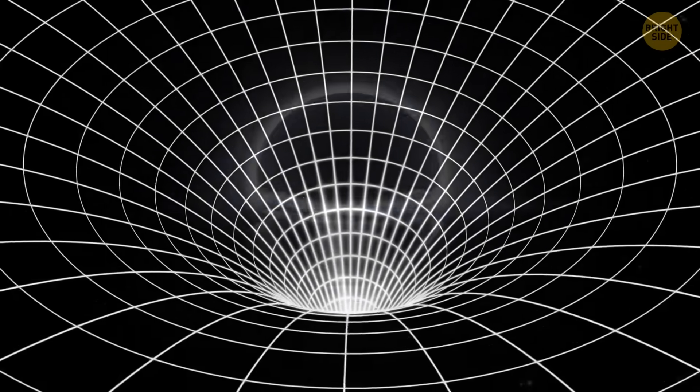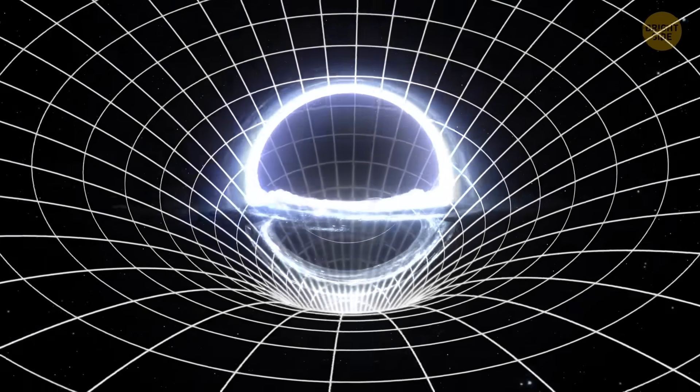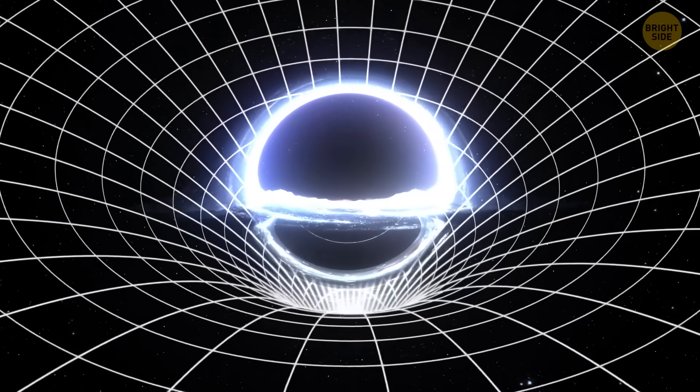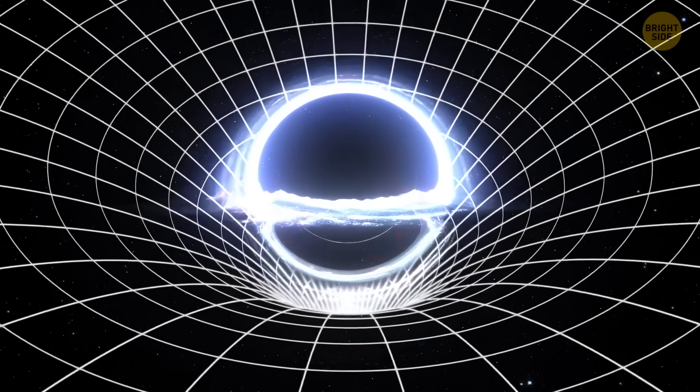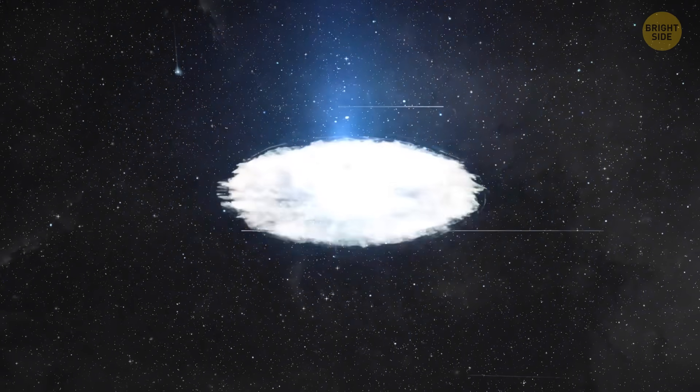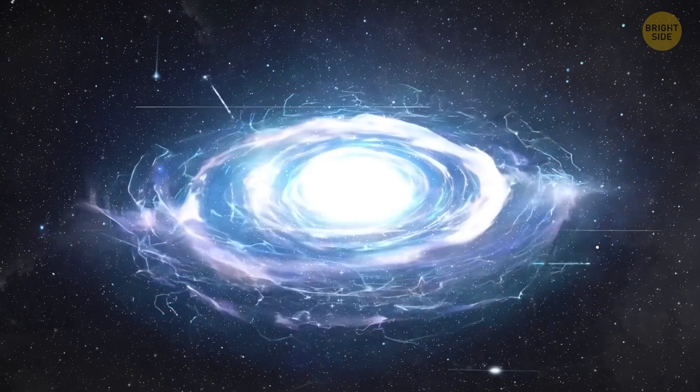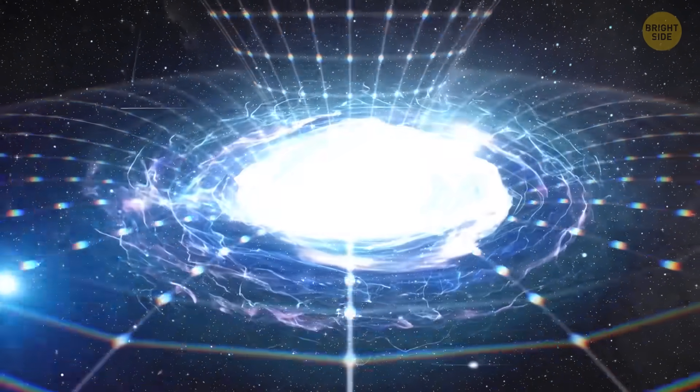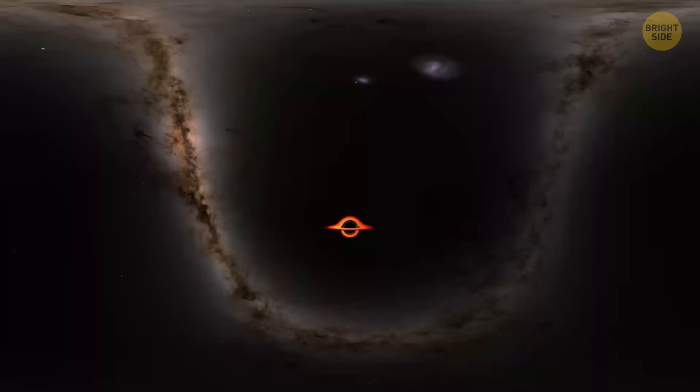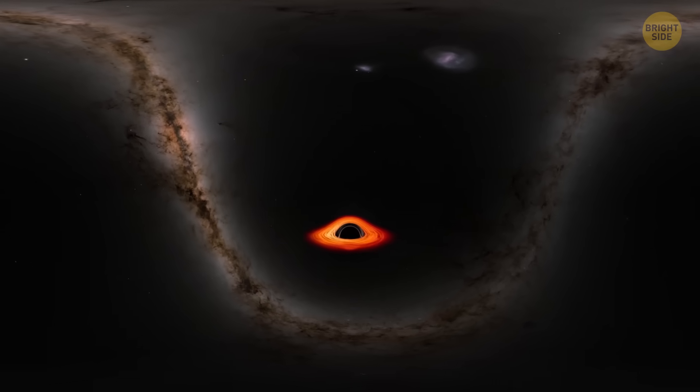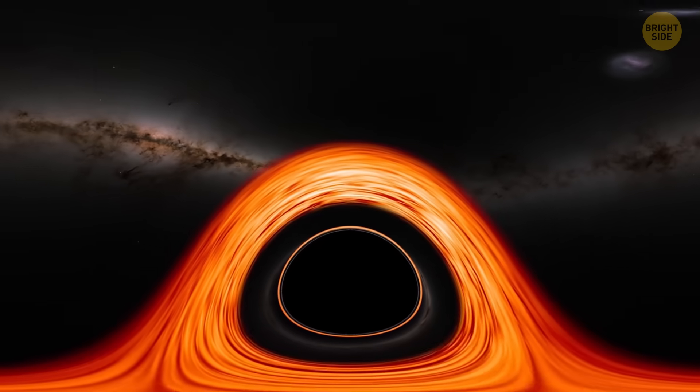Talking about practical time travel, we mentioned that space-time curves around very heavy objects. Does it mean that black holes can be portals to the past and the future? Maybe! Black holes are formed when a massive star collapses inward. Their gravitational pull is so intense that even light can't escape. This means they're perfect for bending not just space, but even time itself.